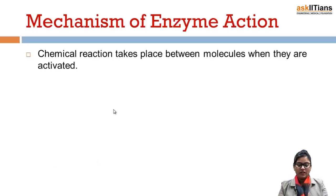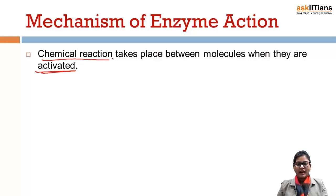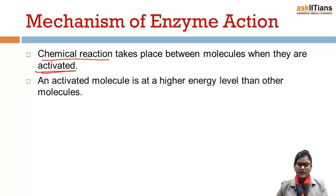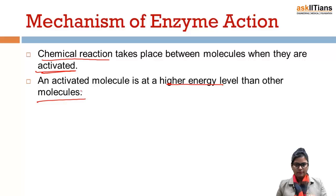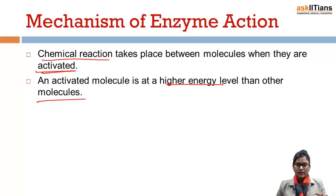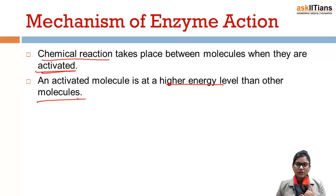Chemical reactions take place between molecules when they are activated. So if two molecules are activated, only then will a chemical reaction take place between those molecules. An activated molecule is at a higher energy level than other molecules. For example, if I am inactive, I am sleeping. Suddenly I get activated — my energy is higher because I am activated and I have started working, while all others are still sleeping. So like this, an activated molecule is at a higher energy level than other molecules.